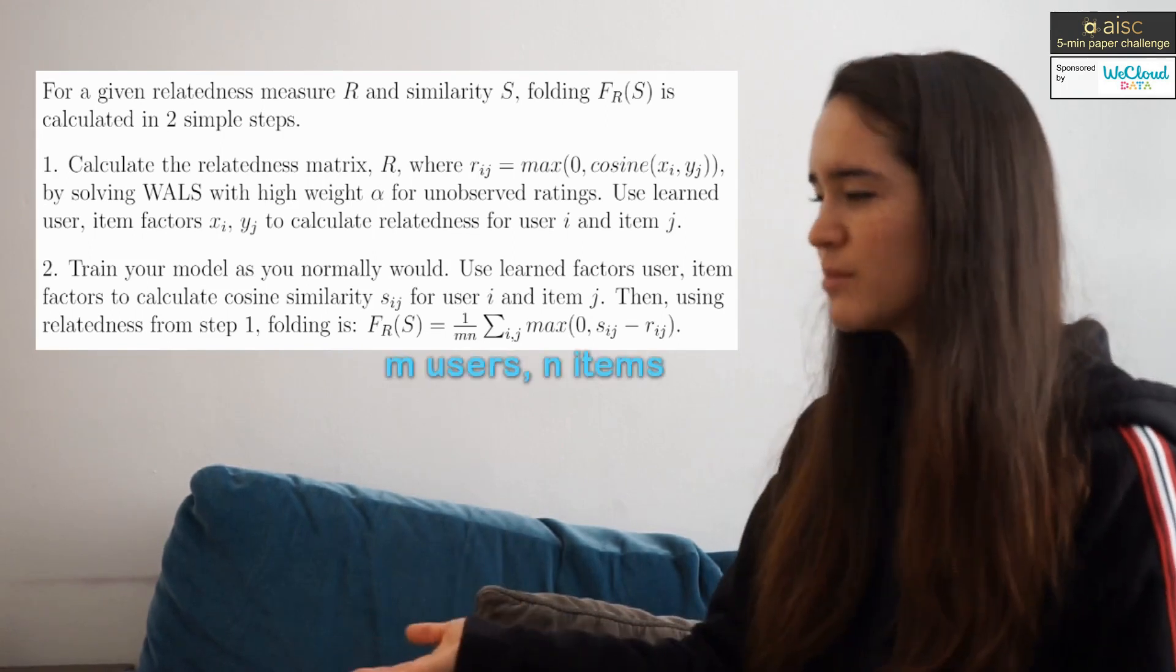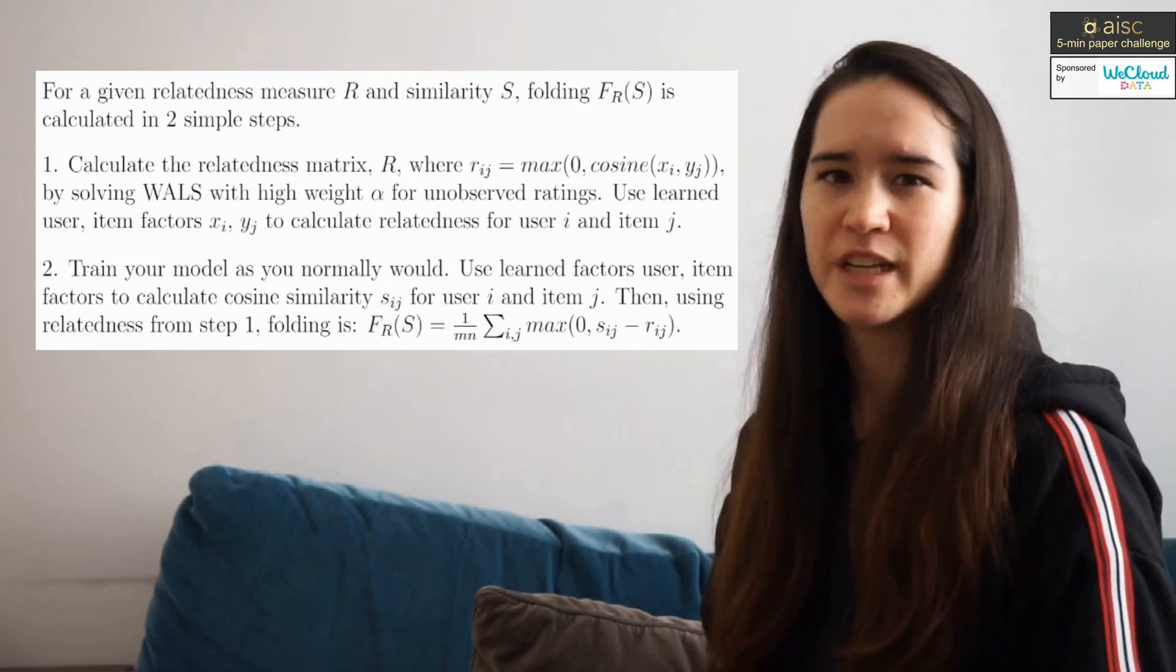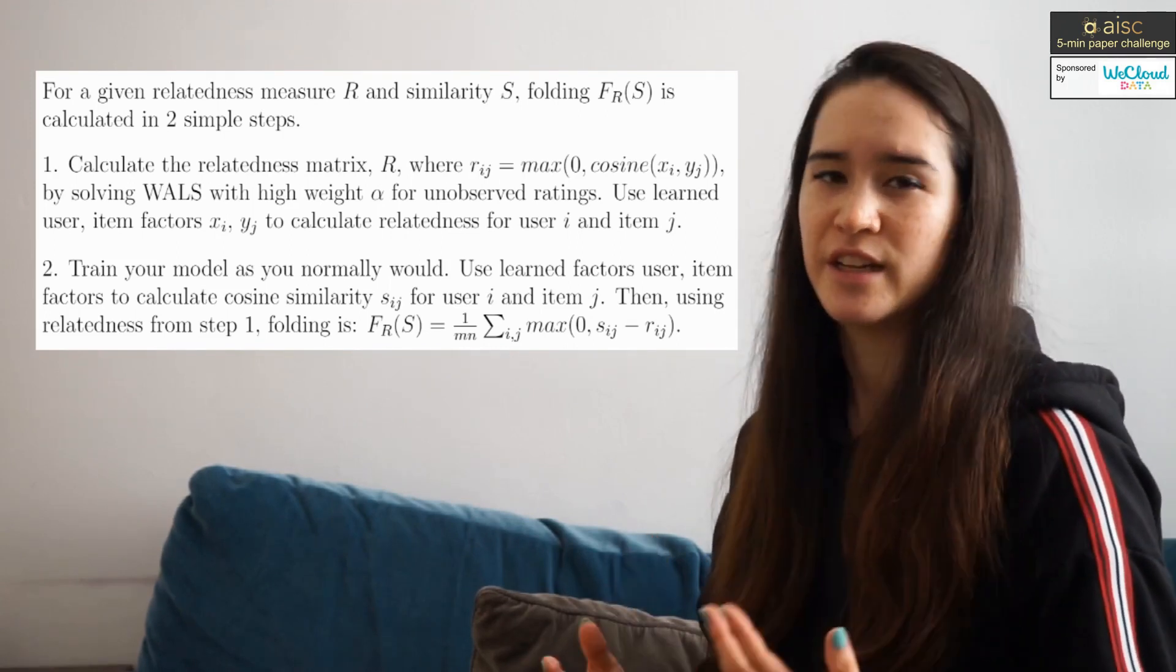Summing over all users and items and dividing by the number of users and number of items in our system, we obtain the amount of folding in our trained model. And note that folding is a badness measure only, and it increases when unrelated pairs are considered dissimilar, but it's not affected when related pairs are considered dissimilar.